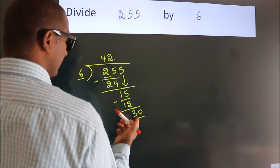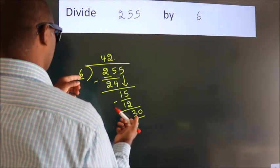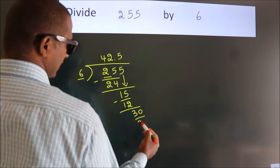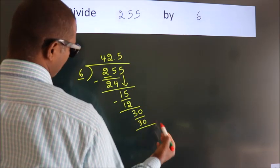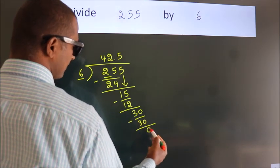When do we get 30? In 6 table, 6 fives 30. Now we subtract, we get 0.